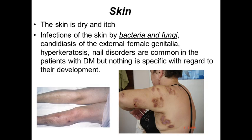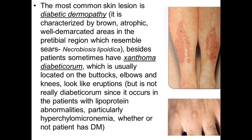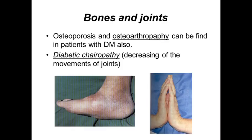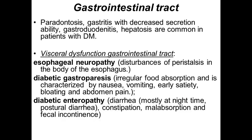In the skin, the patient's skin is dry and each infection of the skin by bacteria, fungi, or of the external genitalia, hyperkeratosis and nail disorders are common in patients with diabetes mellitus. The most common skin lesion is diabetic dermopathy, and prolonged dermopathy can result in scarring processes and ulceration of extremities. In bones and joints, osteoporosis and osteoarthropathy develop. In the GIT system, complications appear as gastritis, decreased secretion ability, gastroenteritis, and hepatosis, which are common in patients with diabetes mellitus. Also visceral dysfunction of GIT such as vagal neuropathy, diabetic gastroparesis, and enteropathy.